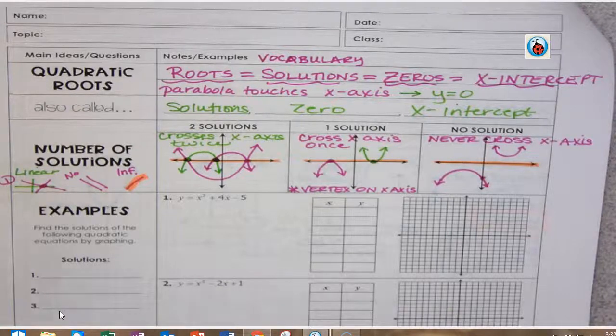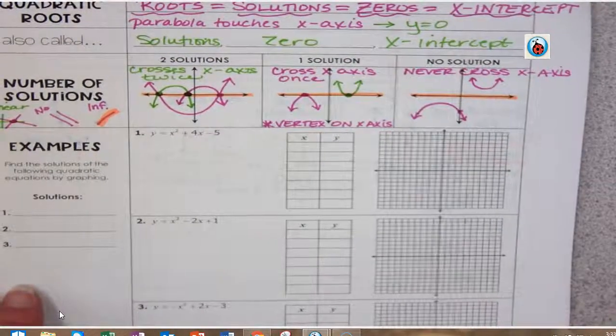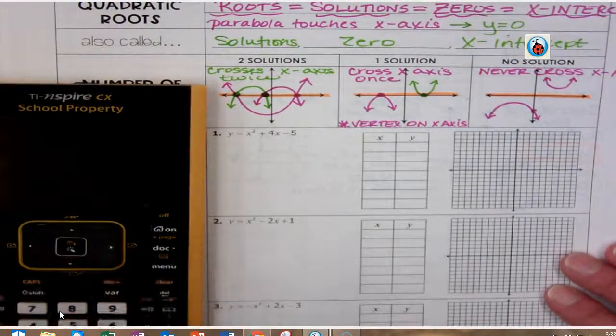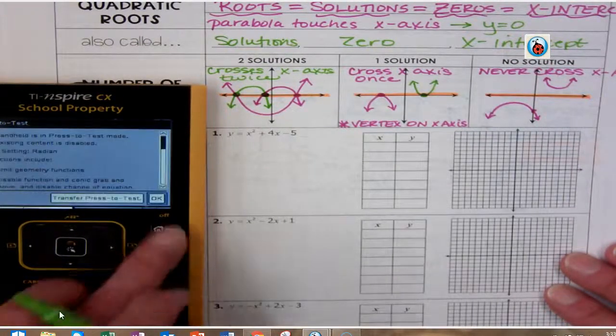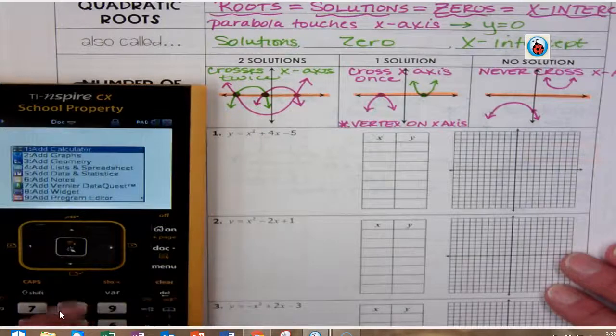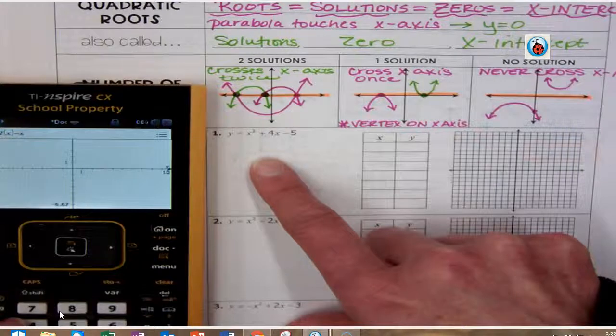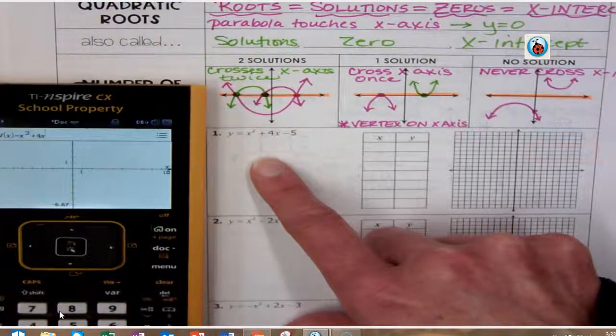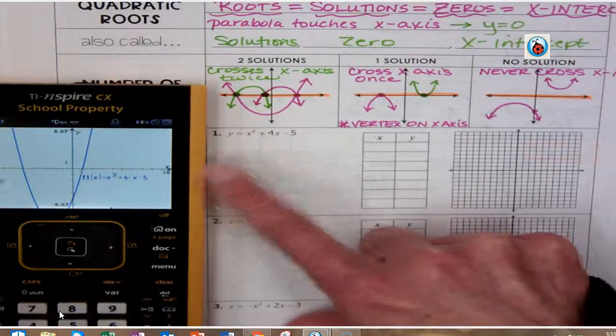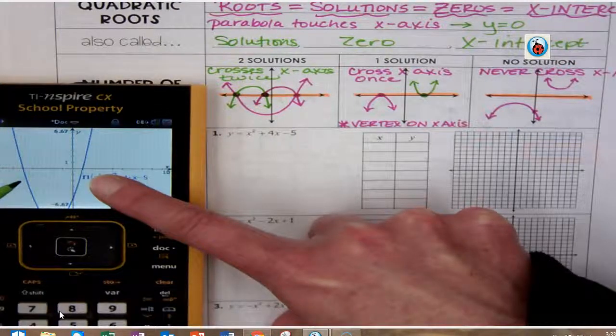So if I was to graph this equation right here, if I were to take my calculator here and plug in this equation x² + 4x - 5, I'm going to see that there are my solutions or my x-axis and I'm going to see my graph.